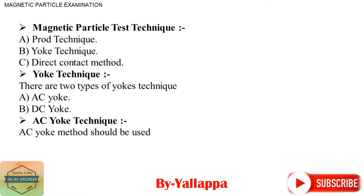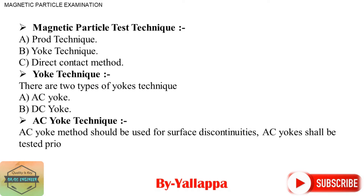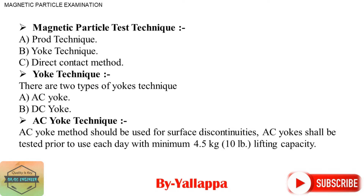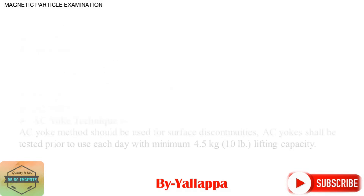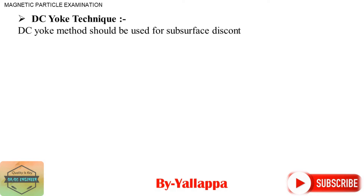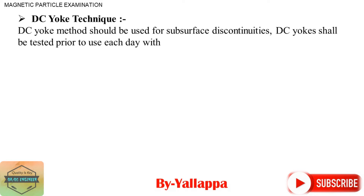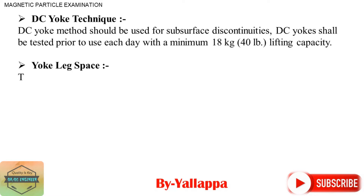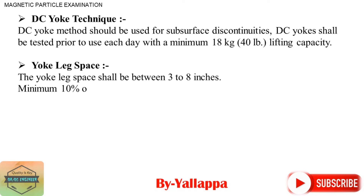AC Yoke Technique: AC Yoke method should be used for surface discontinuities. AC Yokes shall be tested prior to use each day with a minimum lifting capacity of 4.5 kg (10 lb). DC Yoke Technique: DC Yoke method should be used for subsurface discontinuities. DC Yokes shall be tested prior to use each day with a minimum lifting capacity of 18 kg (40 lb).